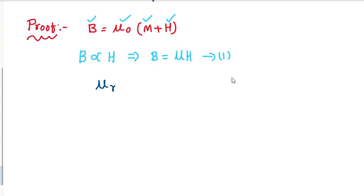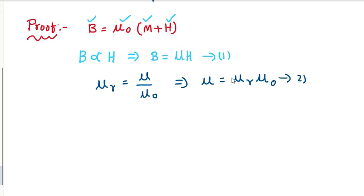The relation between the relative permeability mu r, the permeability of free space mu naught, and the permeability of the medium is: mu r equals mu divided by mu naught. From that, permeability mu equals relative permeability mu r into permeability of free space mu naught. This is equation number two.